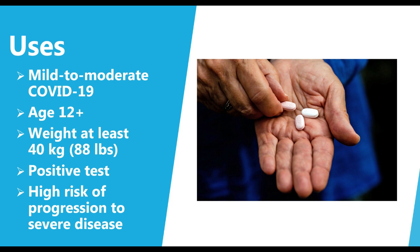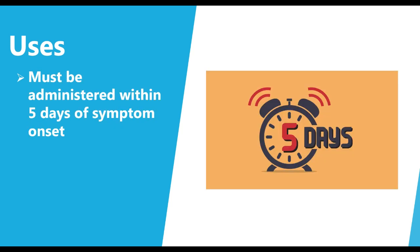In terms of the uses of Paxlovid, there are a couple of criteria. It's going to be used for mild to moderate cases of COVID-19. You have to be at least 12 years old, you have to weigh at least 40 kilos or 88 pounds, and you do have to have an actual positive test — you can't just say that you have COVID and get Paxlovid. The other important thing is that you have to be at high risk of progression to severe disease, meaning hospitalization or death. So if you are at high risk of being hospitalized or dying from COVID-19, you may be a candidate for Paxlovid. It must also be administered within five days of symptom onset; this is when we see the actual benefit of the medication. If your symptoms started a week ago, unfortunately you're not going to be eligible because you are outside of this five-day window.